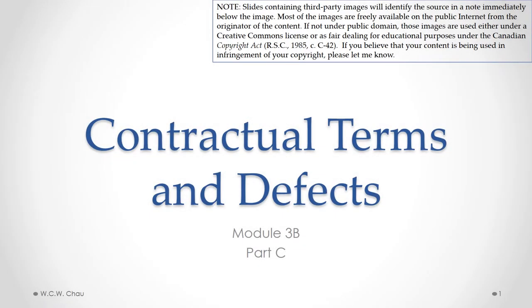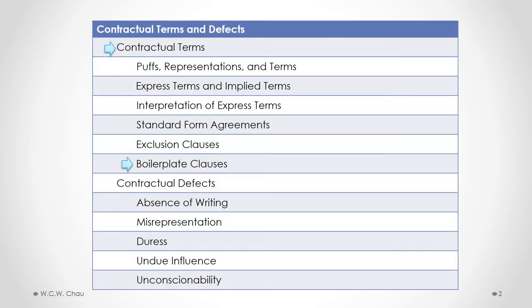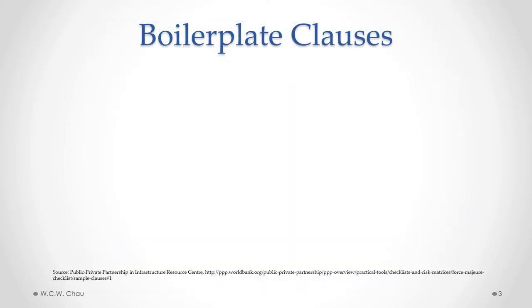This is Wenlin Chow and this is Contractual Terms and Defects, Module 3b, Part C. In this part of the module, we will look at boilerplate clauses. There are many different clauses that are commonly used over and over again in many different types of contracts. Lawyers refer to those clauses as boilerplate clauses.